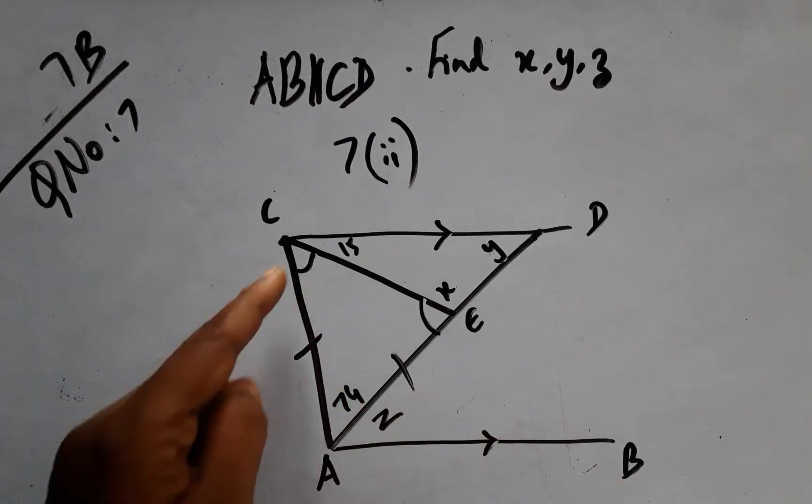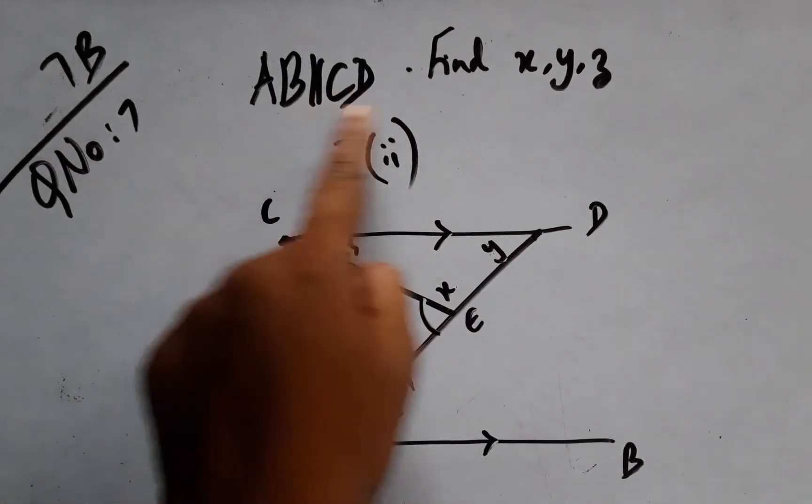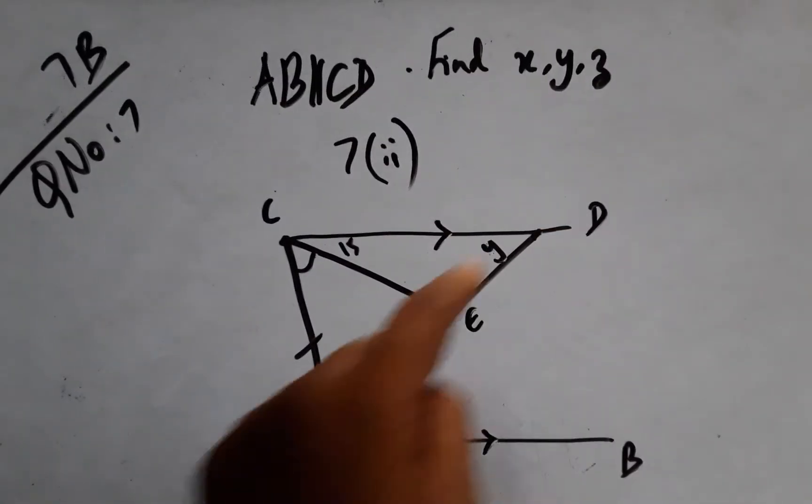Here we are given AB parallel CD in the question itself. Now we are supposed to find X, Y, and Z.